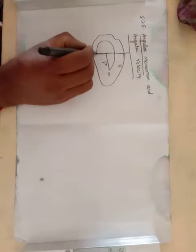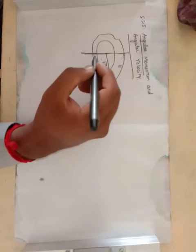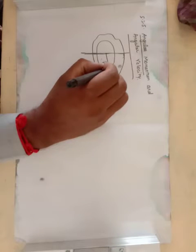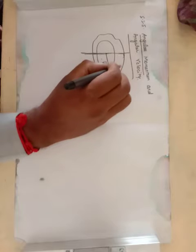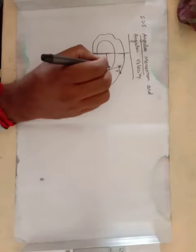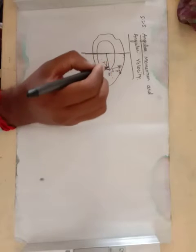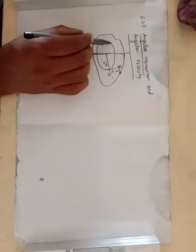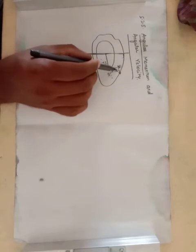The point mass is executing circular motion about the fixed axis. At any instant, the point mass has a linear momentum. That linear momentum p vector is perpendicular to the position vector. At any instant, the linear momentum is tangential to the circular path.